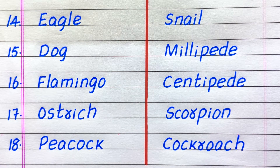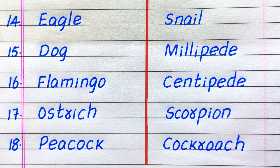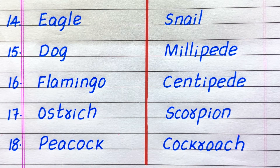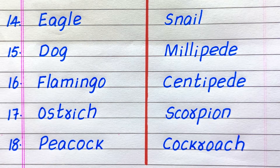14th example of an invertebrate animal is snail, 15th millipede, 16th centipede, 17th scorpion, 18th cockroach.